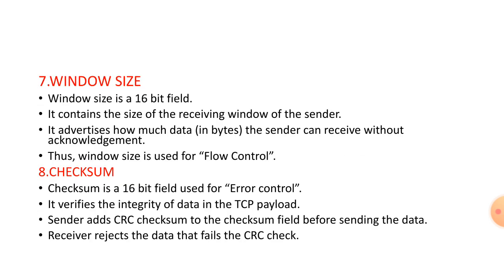The window size is a 16-bit field. It contains the receiver window size and indicates how much data the sender can send without acknowledgement. Checksum is used for error control, whereas window size is used for flow control. Checksum is used to check for errors.